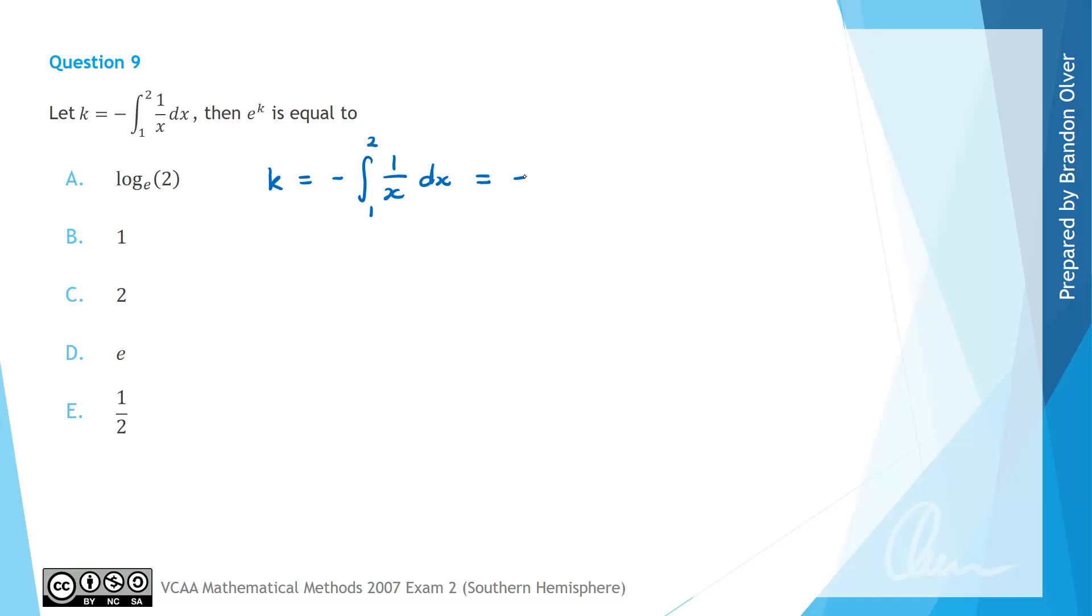That means we could evaluate that as negative the anti-derivative, so 1 on x becomes log e of x. So hopefully you can look that up on your formula sheet if you're not sure. And that's still evaluated between 1 and 2. So that means that we could take the anti-derivative at 2 and subtract away the anti-derivative at 1 to evaluate this integral. But we also have this extra negative symbol out the front.